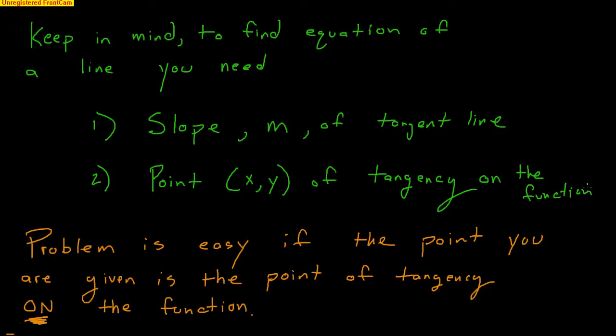Normally, finding the equation of a tangent line is easy if the given point is the point of tangency — you just take the x value, plug it into the derivative, and get the slope. But the trick in these problems is that the point given is not the point of tangency, which makes them a bit harder.